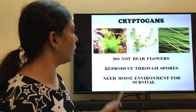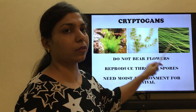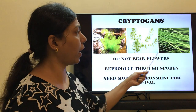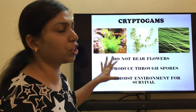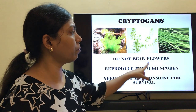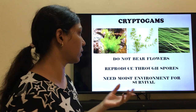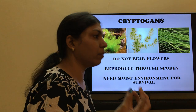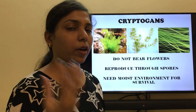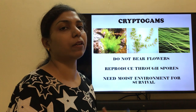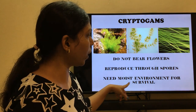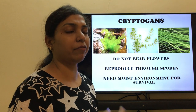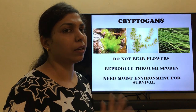The first category is Cryptogams. Examples of Cryptogams include Ulva, Chara, and Spirogyra. The plants in this category do not bear flowers — you don't see any flowers present on them. They reproduce through spores, a special material generated by these plants that helps in the formation of a new plant. They need a moist environment for survival; if the environment is very dry, they will die and disintegrate.